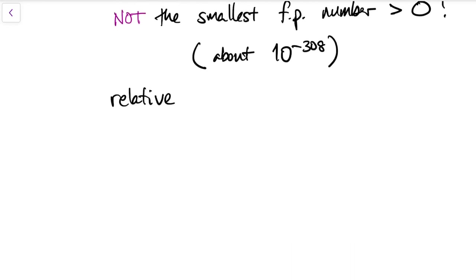There is another important aspect to machine epsilon, though. It also tells us the relative accuracy of floating point arithmetic.